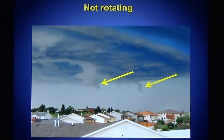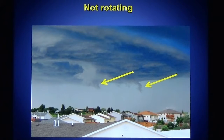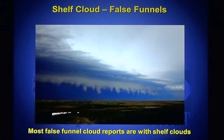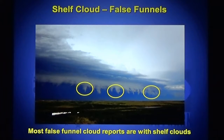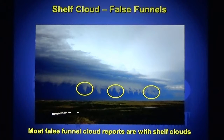In this case, we have some fingers of clouds sticking down, but the fingers are not rotating, so they are not funnel clouds. A finger of cloud sticking down is not much concern unless it is spinning, unless it's rotating. These fingers are actually coming out of this shelf cloud. Here's another picture of a shelf cloud with these false funnels. We need to watch the finger sticking out of the thunderstorm and make sure that if we're going to call it a funnel cloud or a tornado, it's rotating — it's got to be spinning.